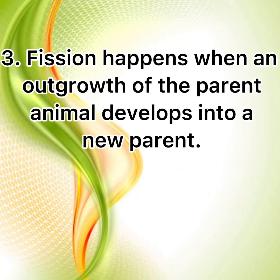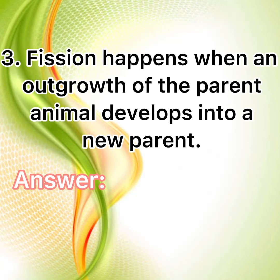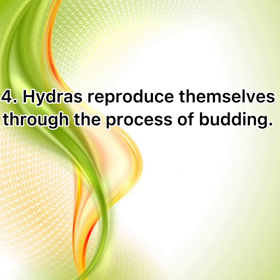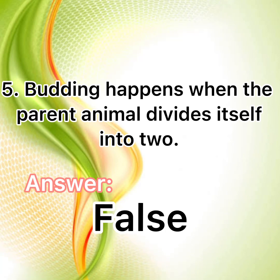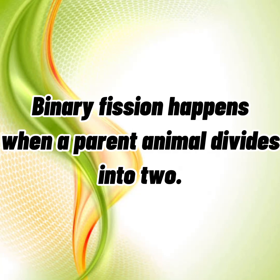3. Fission happens when an outgrowth of the parent animal develops into a new parent — Answer: True. 4. Hydras reproduce themselves through the process of budding — Answer: True. 5. Budding happens when the parent animal divides itself into two — Answer: False. Binary fission happens when a parent animal divides itself into two.